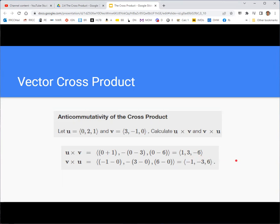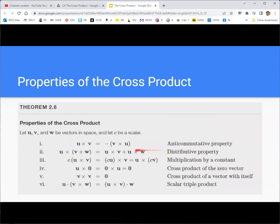This makes sense in terms of what we said with the right hand rule. You'd be twisting your right hand the other way and your thumb will be pointing in the opposite direction. So it's anti-commutative in that switching the order gives you the opposite result.